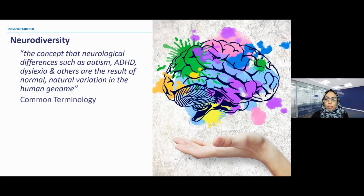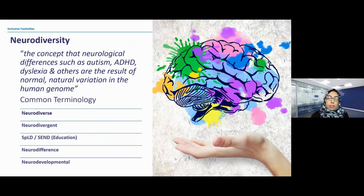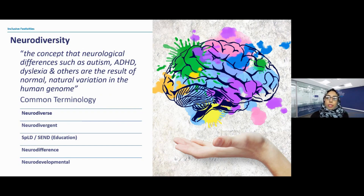Some of the common terminology you may hear includes neurodiverse, neurodivergent, SPLD — specific learning differences — and SEND, special educational needs and disabilities, which are terms that tend to be used in education. We also have neurodevelopmental, and you may hear the word neurotypical, which refers to somebody who is not neurodivergent. The idea of neurodiversity is to embrace difference, but also recognise that some people who are neurodivergent will require extra support, and we're trying to move away from this medical model of abnormality or something that needs curing.